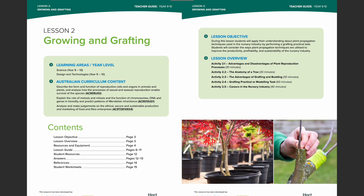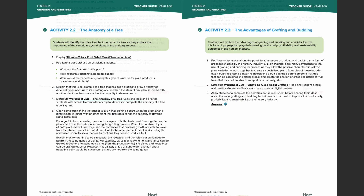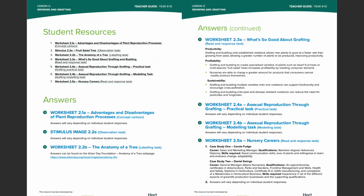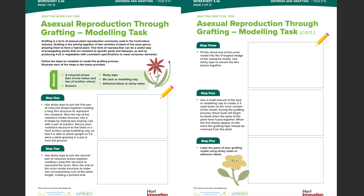The second lesson within the resource sees students practically apply their understanding of plant propagation techniques by performing a grafting task. Students will consolidate their understanding of the content from lesson one and consider the ways plant propagation techniques are used to improve the productivity, profitability, and sustainability of the nursery industry. The grafting task has been designed with teacher guidance for two different formats — either as an actual grafting task using real rootstock and scion, or as a modelling task for schools who may not have access to the required plant materials. Both versions allow students the opportunity to perform a v-graft, recording the steps involved in an accompanying worksheet.